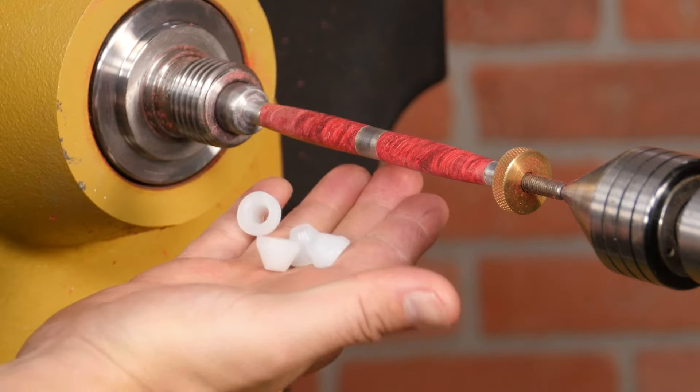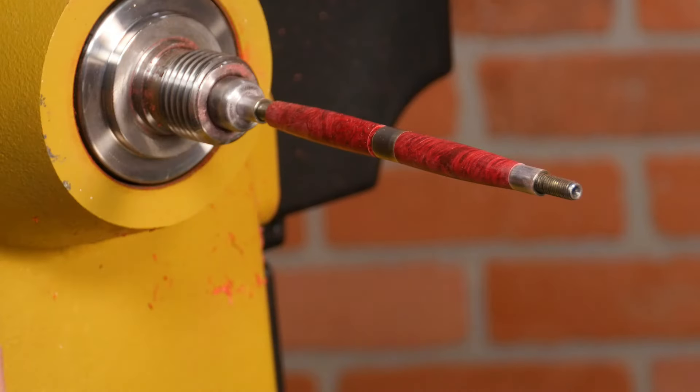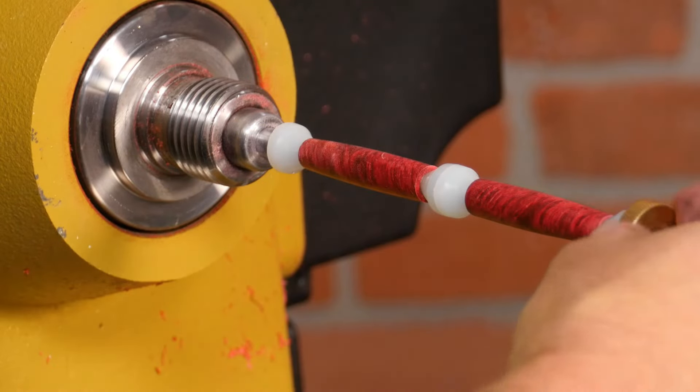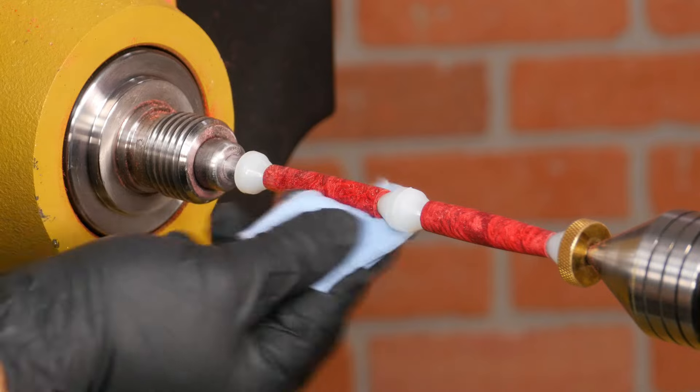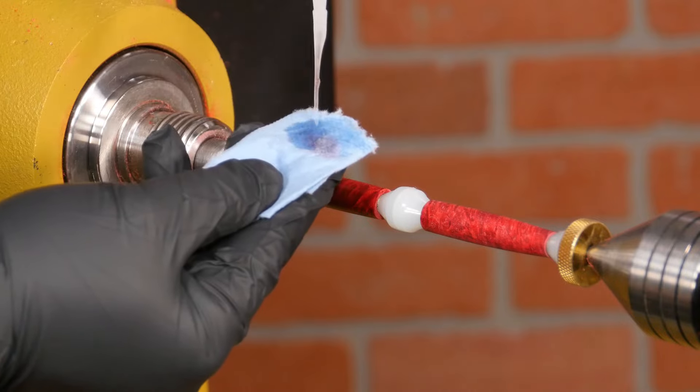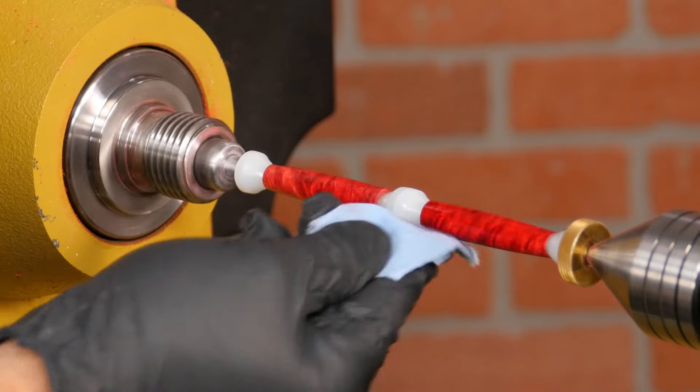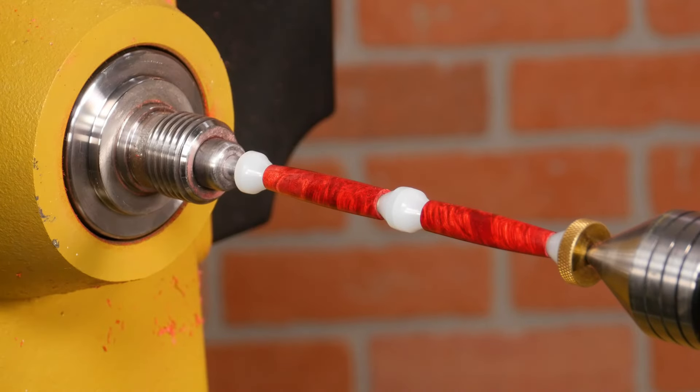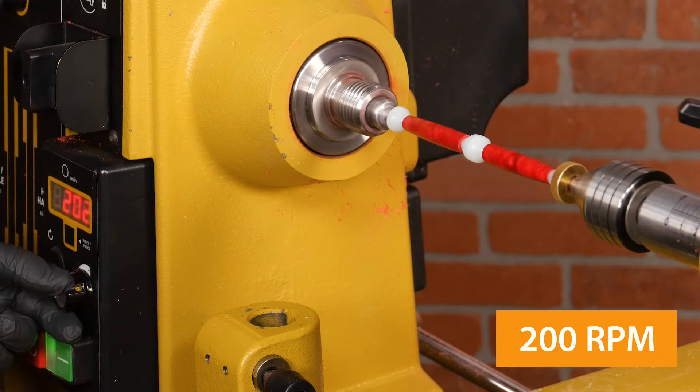Start by swapping your bushings with the non-stick pen bushings to prevent the blanks from being glued to the bushings. Let's start by covering one blank at a time in thin CA glue to seal and strengthen the wood. Then lightly spray with activator to set the glue.